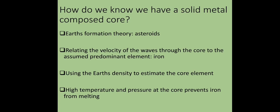Thirdly, we use the earth's density to estimate the core element. We calculate the earth's density using the volume and gravitational pull. From this we can conclude the element forming the core. Using iron's density to calculate the earth's mass gives us the closest estimate of the earth's mass. Last point, high temperature and pressure at the core prevents iron from melting. At those conditions, the solid state is preferred.